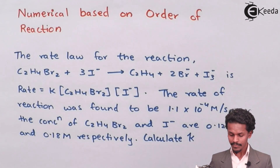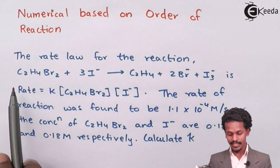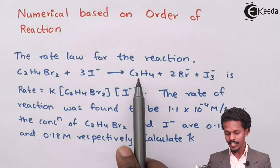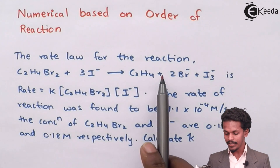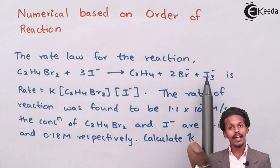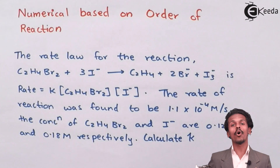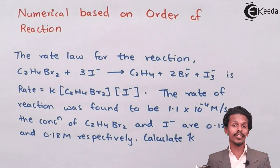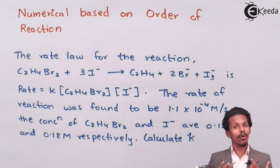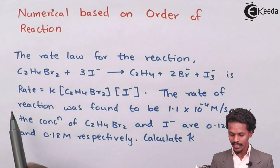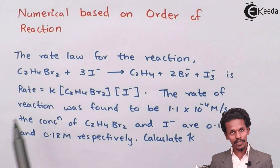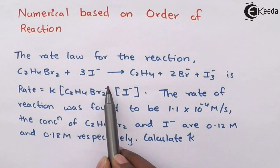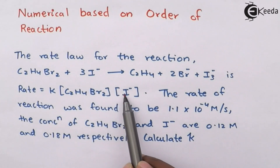The question says the rate law for the reaction: C2H4Br2 plus 3 times I⁻ gives C2H4 (E3) plus 2 times Br⁻ and I3⁻. The rate law has already been mentioned in this numerical, which will make it very easy for us to solve. The rate law given for this reaction is: rate equals K times [C2H4Br2] raised to 1 and [I⁻] also raised to 1.